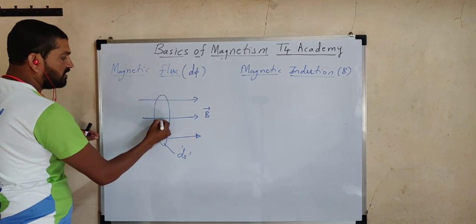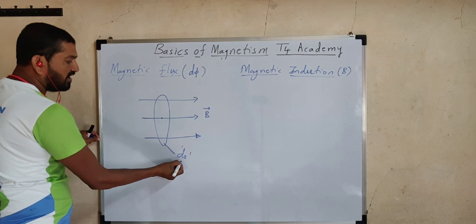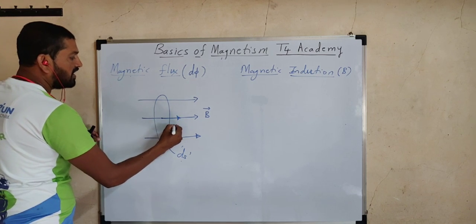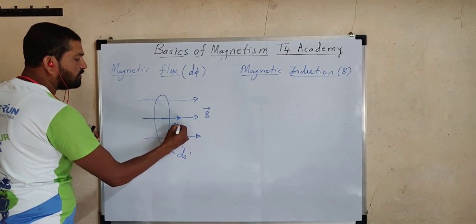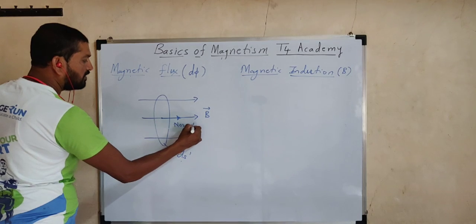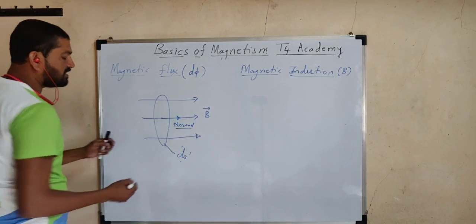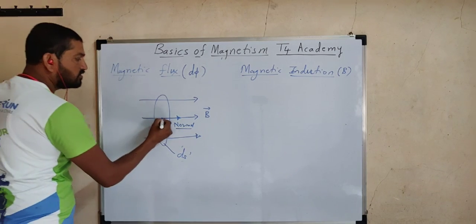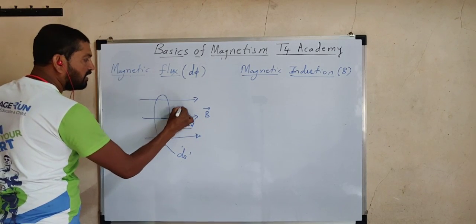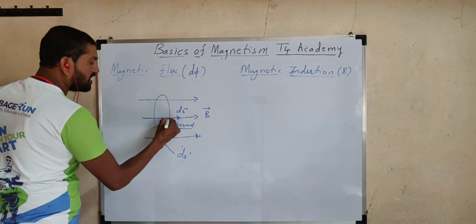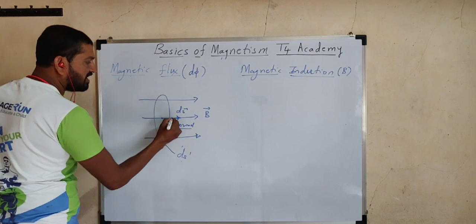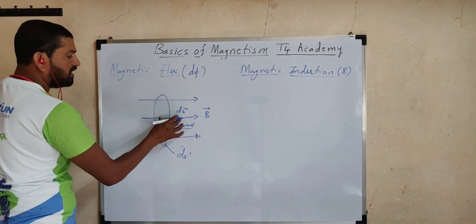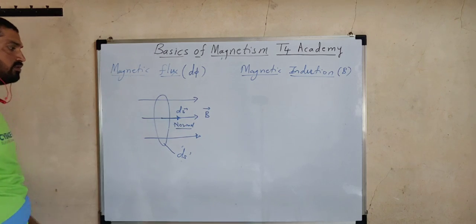Generally, a small area inside a magnetic field is considered as a vector. That vector is always represented on the normal — a line perpendicular to the cross section passing through the center. On this normal, you can represent this area with a straight arrow line. The arrow indicates direction and the length of the arrow line gives the magnitude.